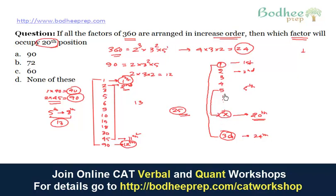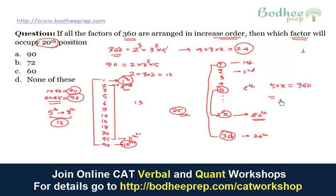It is easy to identify that the 5th factor of 360 is 5. We have assumed the 20th factor is x, so the product 5 × x should equal 360. With this, we get the answer as 72, which is option B.